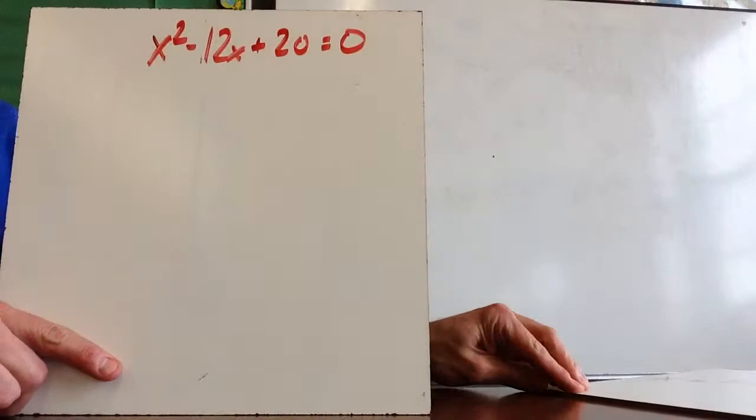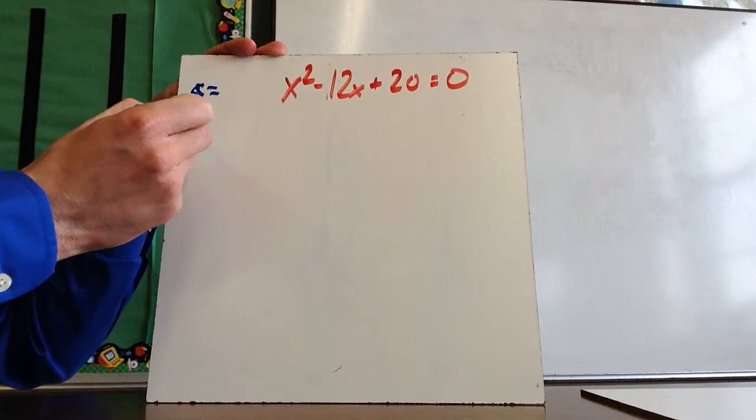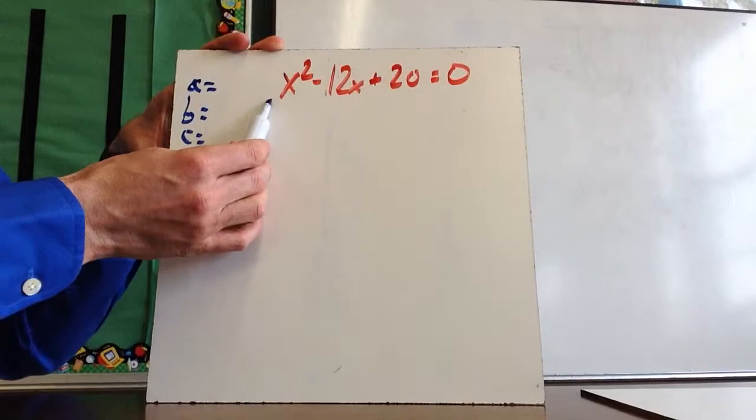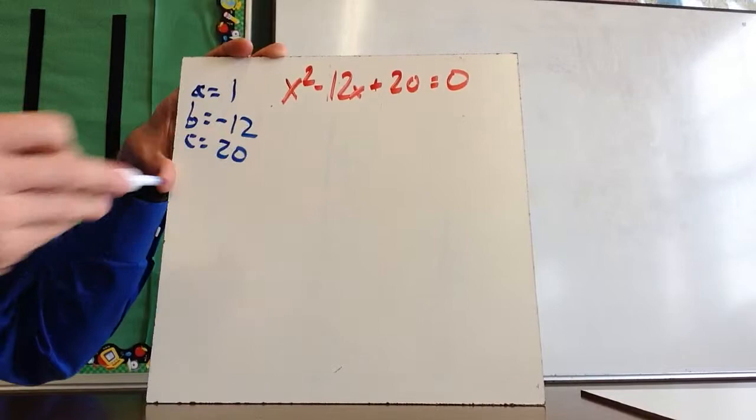Let's think about how to use that formula to solve a problem like x squared minus 12x plus 20. The first thing you want to do is identify a, b, and c correctly, keeping in mind the signs. Here, a equals 1 (in front of x squared), b equals negative 12, and c equals positive 20. Now I'm going to take these three numbers and put them into the formula.